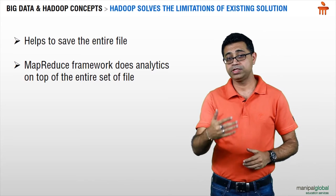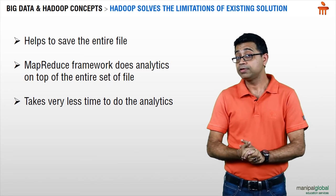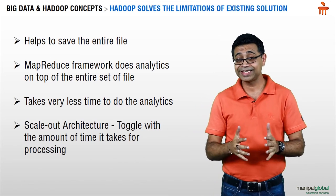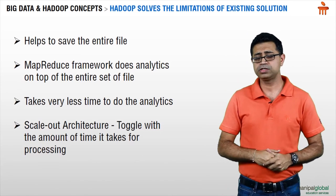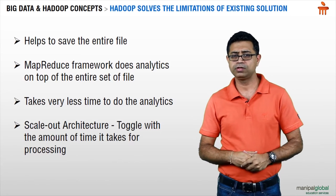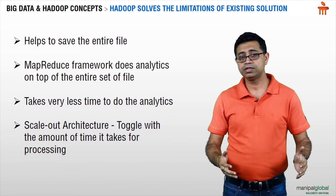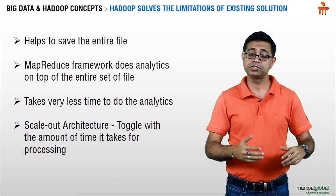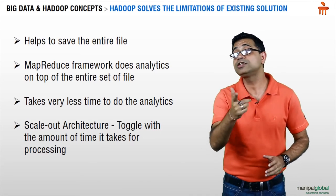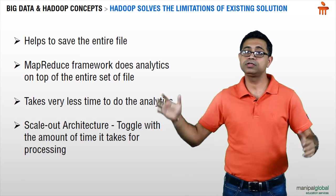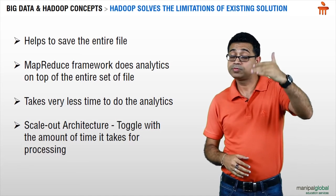While in data warehousing it was taking days, weeks, or months to do analytics, here in Hadoop it takes maybe just a couple of hours. And since this is a scale-out architecture, you can toggle with the amount of time it takes to do the processing. If in your cluster you've got one Name Node and 25 commodity machines and it takes two hours to do analytics on one zettabyte of data, by increasing the number of commodity machines from 25 to 50, the time it takes to do the computation becomes exactly half. You keep scaling out, keep increasing the number of commodity machines, and the computation time directly keeps coming down. That's how Hadoop solves this problem.